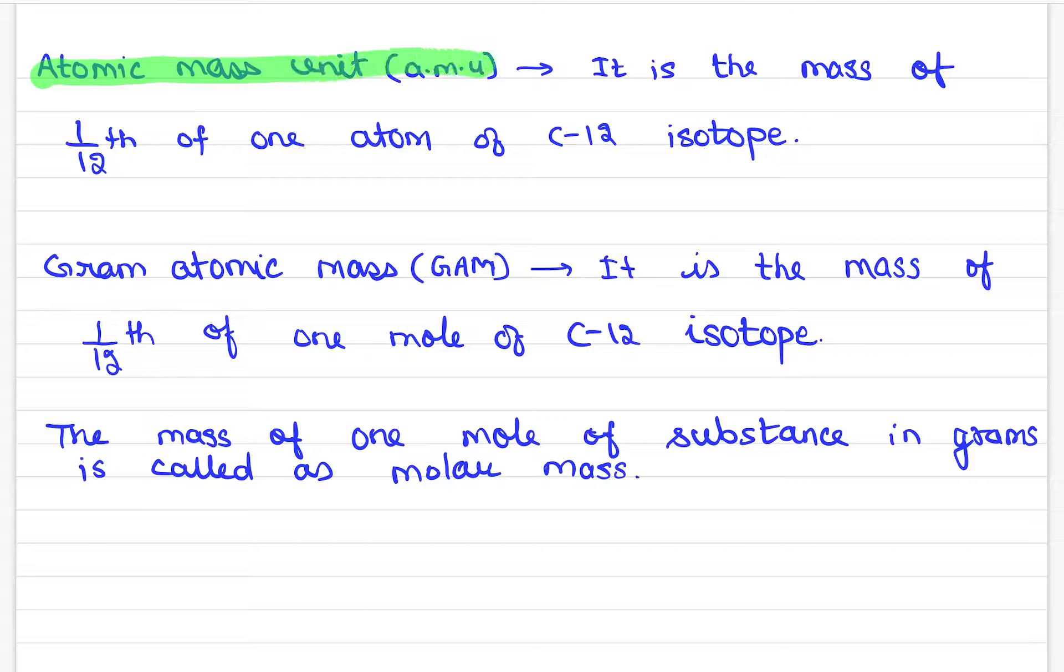I suggest you have atomic mass unit and gram atomic mass. So, if we look at the difference, atomic mass unit is mass of 1/12th of one atom of carbon-12 isotope. Gram atomic mass is mass of 1/12th of one mole of carbon-12 isotope.